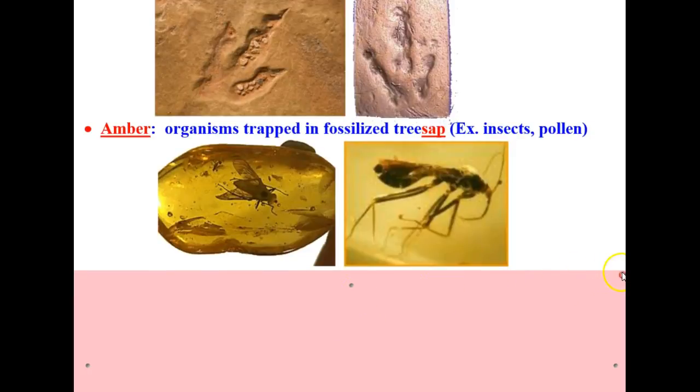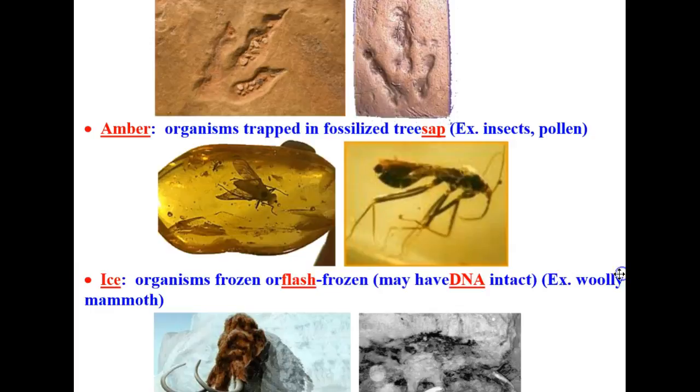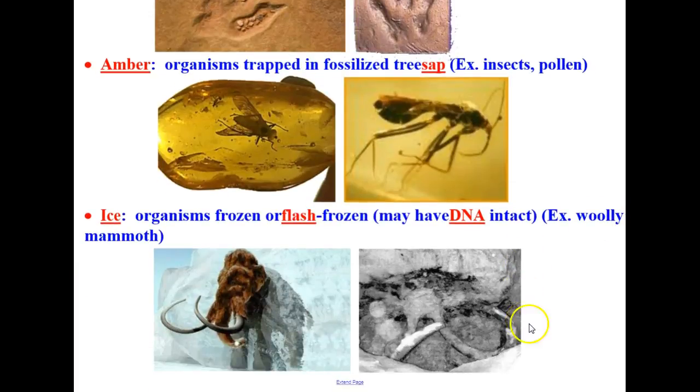The last type of fossils are the ones formed in ice. Organisms frozen or flash frozen that may have their DNA intact. Examples are the woolly mammoths pictured here, for example.